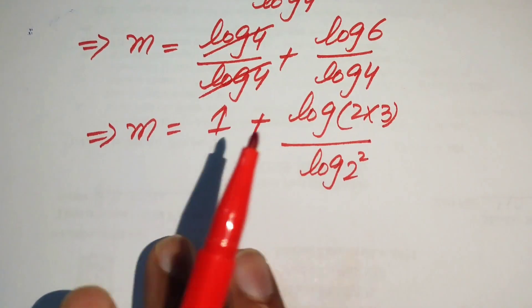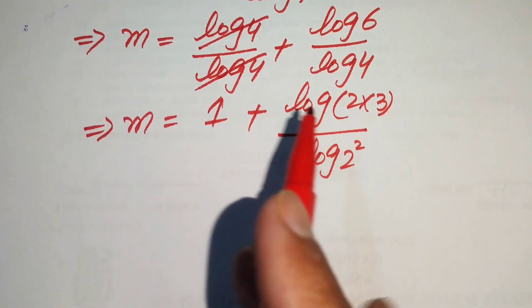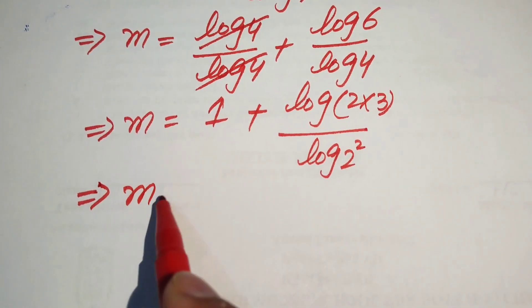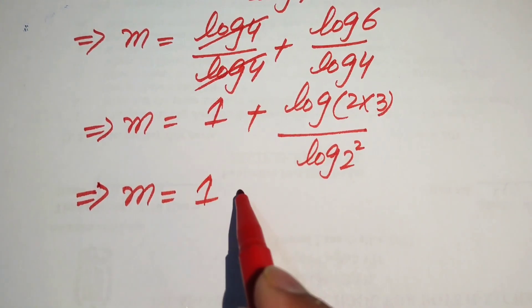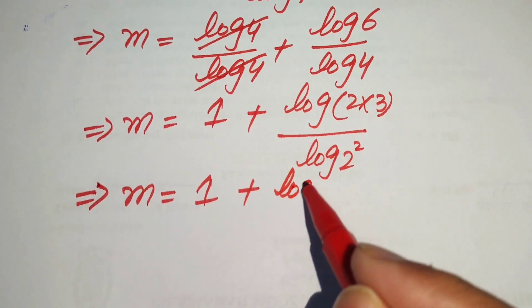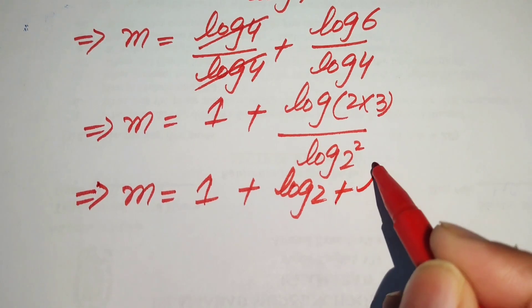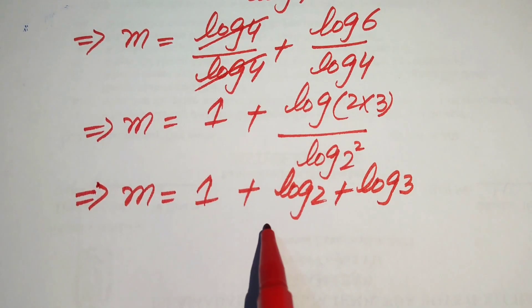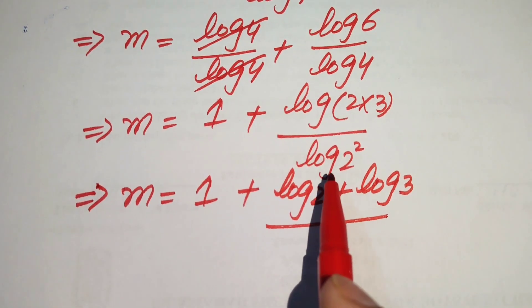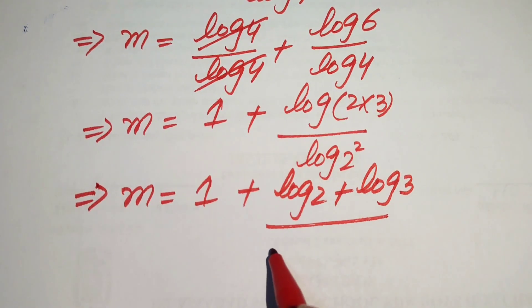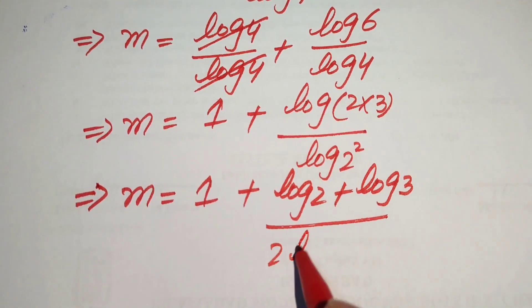We apply this property to the numerator, and it is written as m is equals to 1 plus log of 2 plus log of 3, divided by — using the power rule — 2 times log 2.